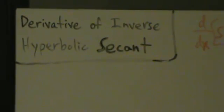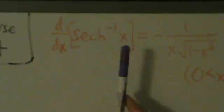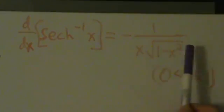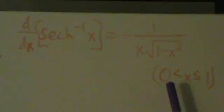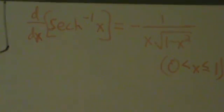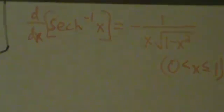In this video we're going to do the derivative of the inverse hyperbolic secant. So d/dx of inverse hyperbolic secant of x is equal to negative 1 divided by x times the square root of 1 minus x squared. We also have the restriction that 0 is strictly less than x, less than or equal to 1. This comes from the definition of inverse hyperbolic secant of x — it's not really a calculus thing, it's just from the definition of this function.